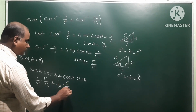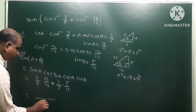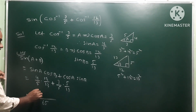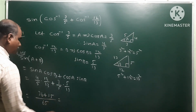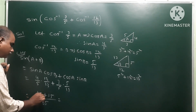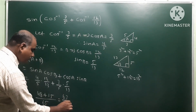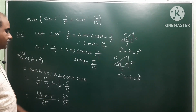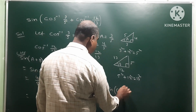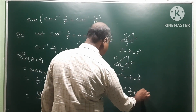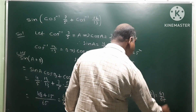Take LCM of 13 and 5, which is 65. So 12 fours are 48, and 3 fives are 15. Forty-eight plus fifteen equals sixty-three. We get 63 by 65. Therefore, sine of cos inverse 3 by 5 plus cos inverse 12 by 13 is equal to 63 by 65.